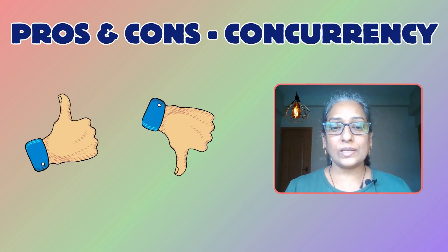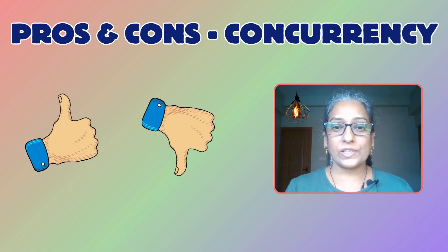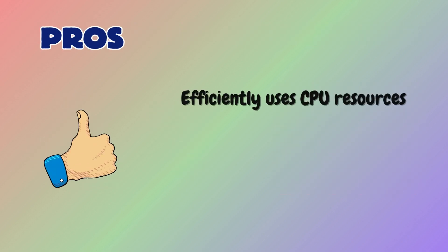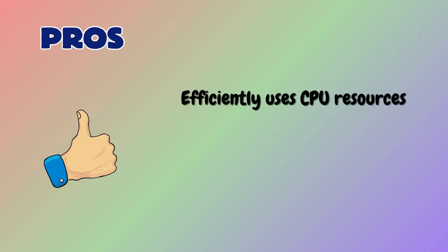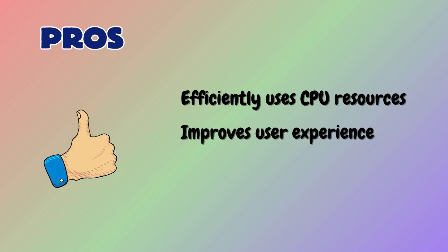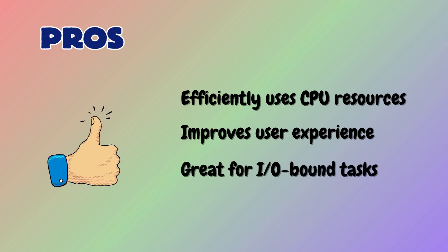Let's quickly discuss the pros and cons of concurrency. With concurrency, CPU usage is optimized and it improves user experience by keeping applications responsive. Concurrency is also great for I/O-bound tasks, as the CPU can switch tasks instead of waiting for I/O completion.